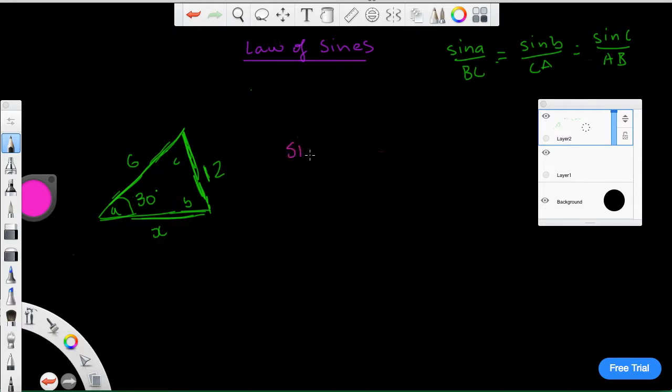According to here, sine of A, or 30, sine 30 degrees over 12 equals sine B over 6, and that equals to sine C over x. So we need to figure, and just focus on this part of the problem first. Let's do that.